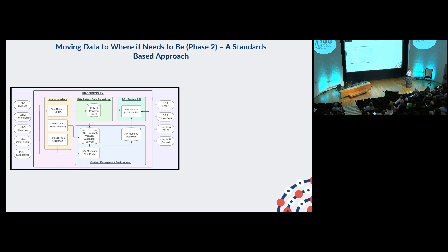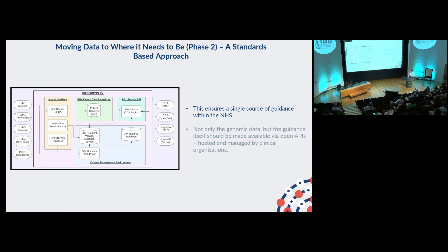If you try to do bespoke implementations in each electronic healthcare record or in each region, you have the issue where you might get variation in clinical guidance, with some systems using guidance from CPIC, some using guidance from the DPWG. This ensures a single source of guidance within the NHS, ensures quality control, and means we can curate that guidance over time as the evidence updates.